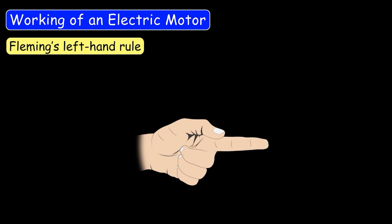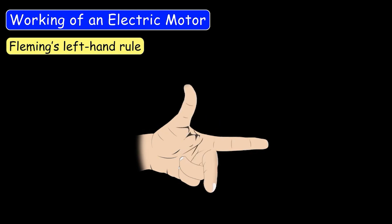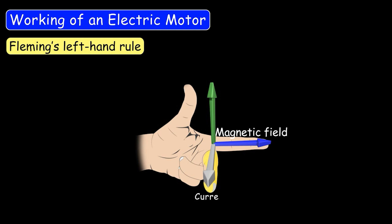Now let's learn Fleming's left-hand rule. If we completely stretch the first finger, the second finger, and the thumb of our left hand such that the three fingers are mutually perpendicular to each other, the direction of the magnetic field is represented by the first finger, the direction of the current is represented by the second finger, and the thumb represents the direction of the force experienced by the current-carrying conductor.